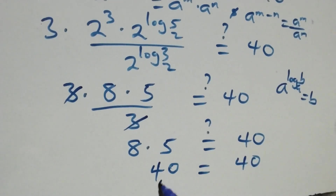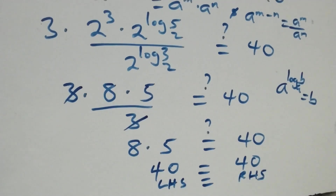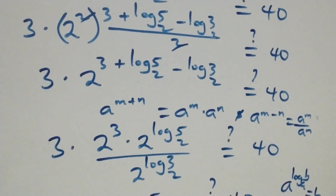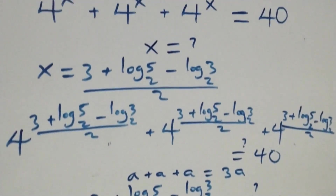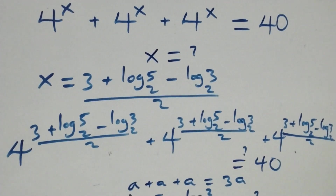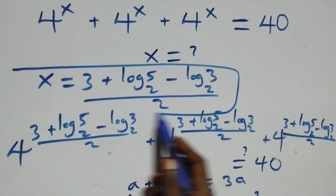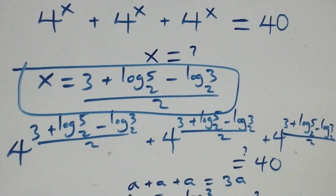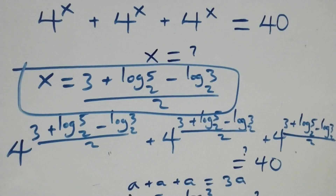The left hand side equals the right hand side. Therefore, we conclude that x equals to 3 plus log 5 base 2 minus log 3 base 2, all over 2, satisfies this given problem. Thank you for watching. Don't forget to subscribe for more videos, turn the notification bell, share this video, give a thumbs up, and put your comments. See you next class, bye for now.